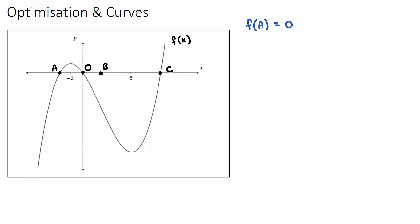What does f'(A) equal? f'(A) means what is the slope or what is the gradient at point A. So f(A) meant the y-value; f'(A) means what is the slope. At point A, we don't know the exact answer of the slope, but we do know that it's part of a line that seems to be sloping up. So the first derivative at A will be some positive answer — f'(A) will be positive.